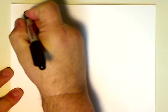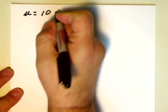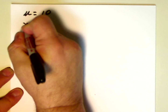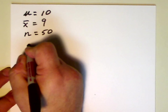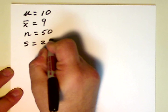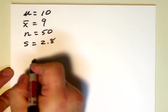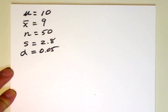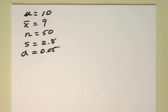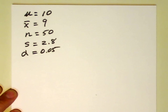Let's begin by writing down the relevant information. We know based on the question that mu, the population mean, is 10. We know that the sample mean is 9, the sample size is 50, and the sample standard deviation is 2.8. We know that we're working at the 5% level of significance. This alpha, the level of significance, is usually chosen by the mathematician, although on occasion the client will request that a certain level be used.